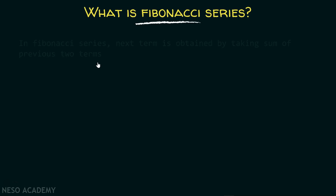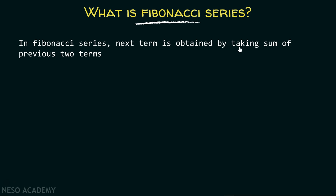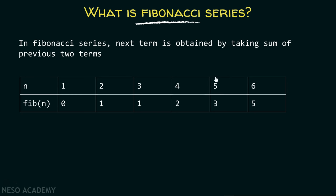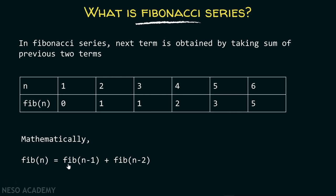In Fibonacci series, the next term is obtained by taking the sum of the previous two terms. For example, the value of the fifth term is obtained by adding the fourth term and the third term, which gives us 2 plus 1 equals 3. Mathematically, Fibonacci(n) = Fibonacci(n-1) + Fibonacci(n-2).